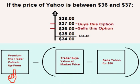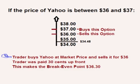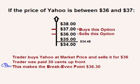That loss is subtracted from the $0.30 the trader was paid upfront. The breakeven point is the strike price of $36 plus the $0.30 premium that the trader was paid upfront for placing the spread, making the breakeven point on this trade $36.30.